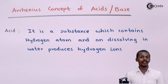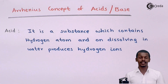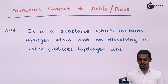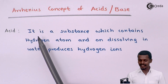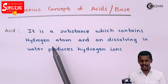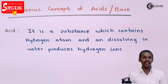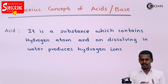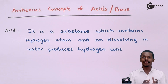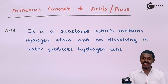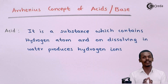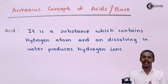Talking about what is an acid according to the Arrhenius concept, it is a substance which contains a hydrogen atom and when dissolved in water produces hydrogen ions. So those substances which consist of hydrogen atoms but when dissolved in water they form hydrogen ions — those kinds of substances are known as acids according to the Arrhenius concept.